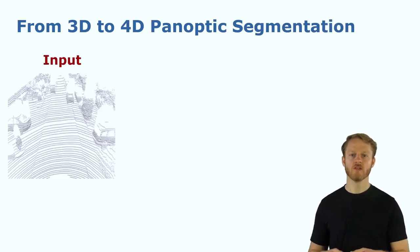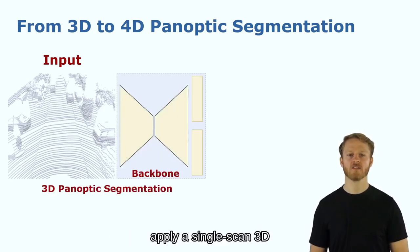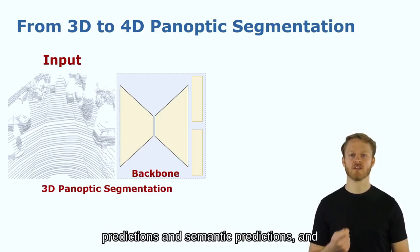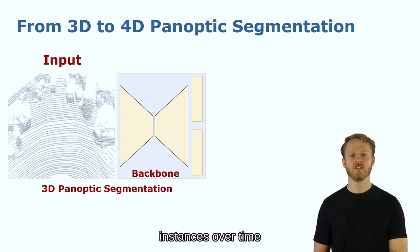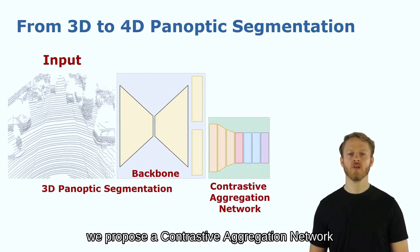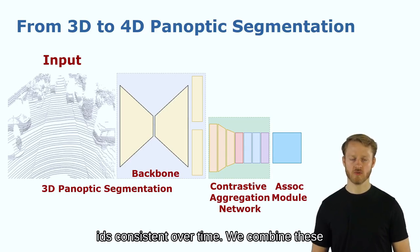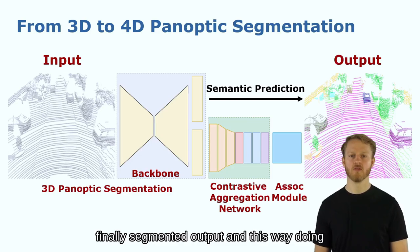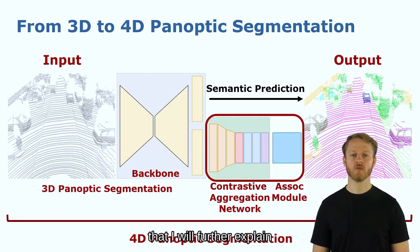To do this we go from 3D to 4D panoptic segmentation. We take as input 3D LiDAR scans and apply a single scan 3D panoptic segmentation backbone to get instance prediction and semantic predictions. And what we do is we associate these instances over time. We propose a contrastive aggregation network and an association module to get instance IDs consistent over time. We combine these with the semantic predictions to get the finally segmented output and this way doing 4D panoptic segmentation. The main contribution of our approach are these two blocks that I will further explain.